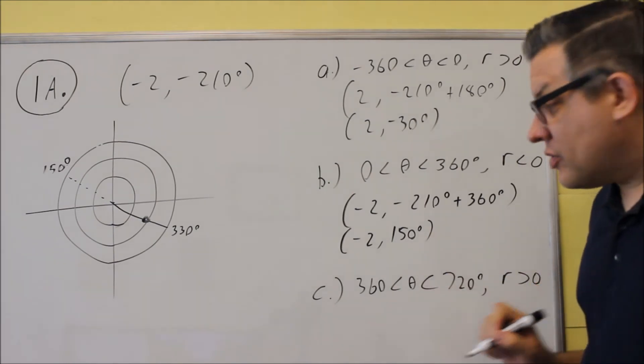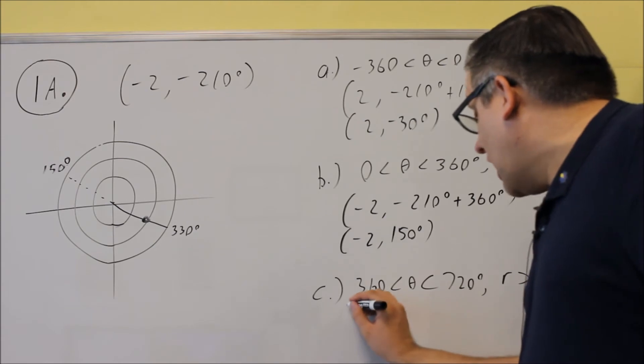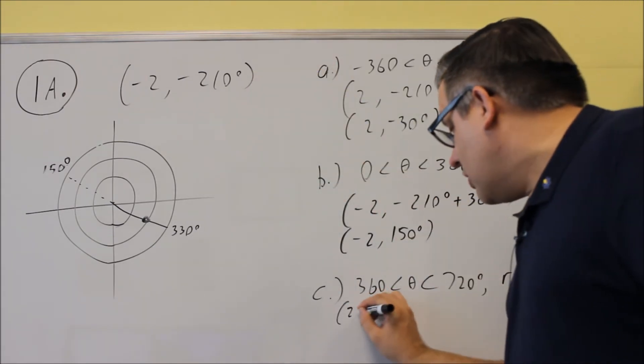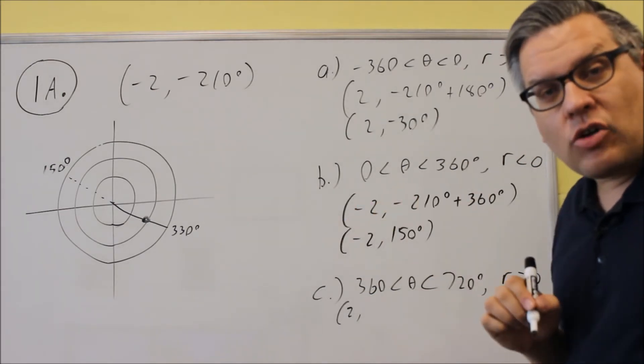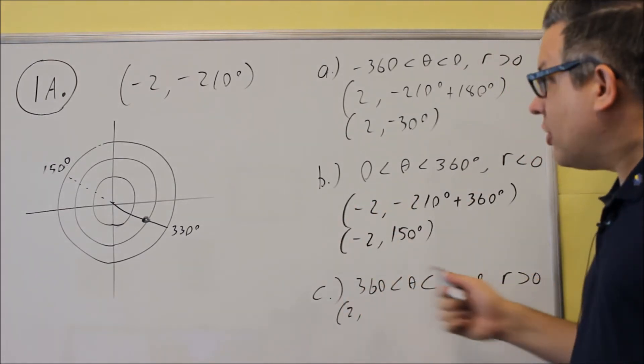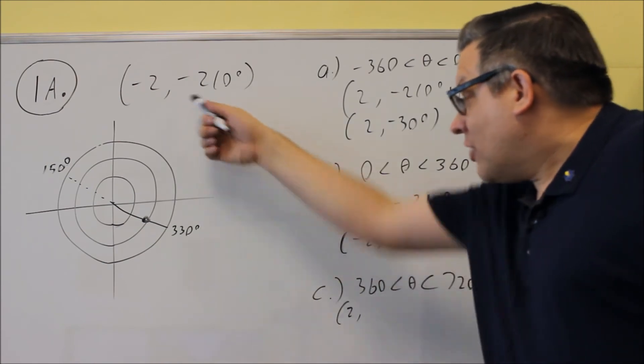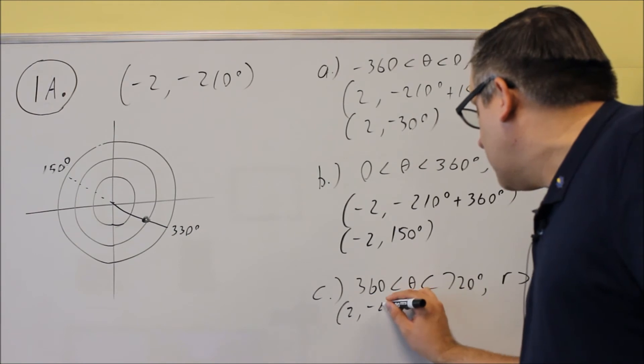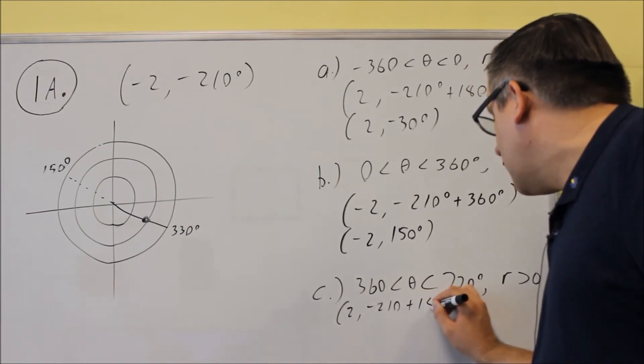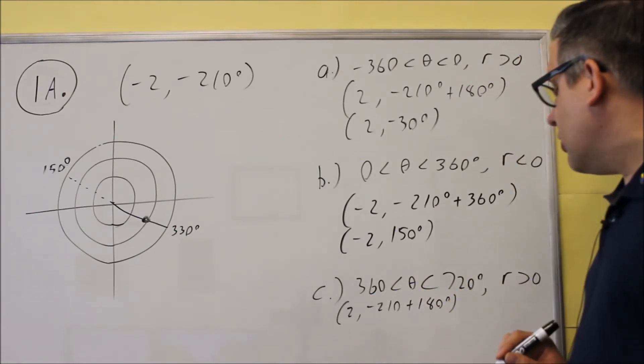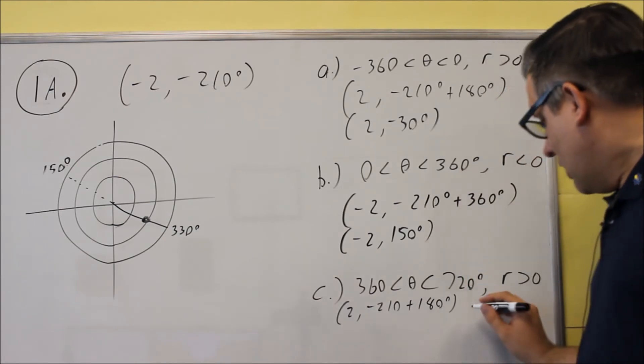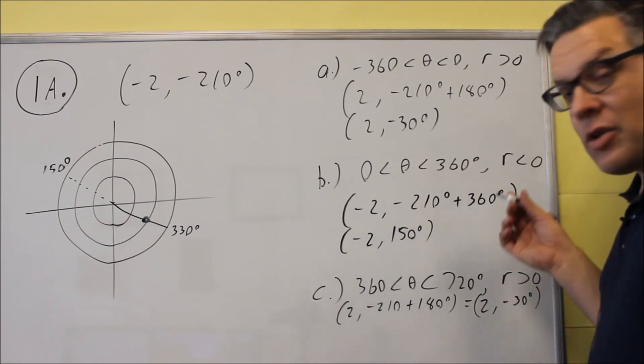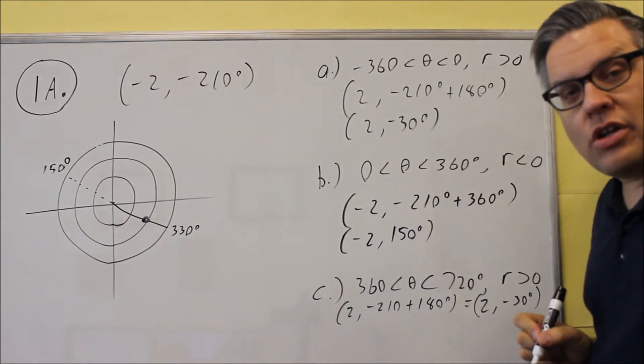Next, the R has to be greater than 0. And so this time we have to change the sign of the R from negative into positive. When we do that, we have to add or subtract 180 because we're changing it from a negative into a positive. So the first step we're going to do is take negative 210 and we're going to add 180 degrees to it like we did in the first step. And we know that we're going to get 2 comma negative 30 for that. So the first step is exactly the same, actually, as what we did in A.